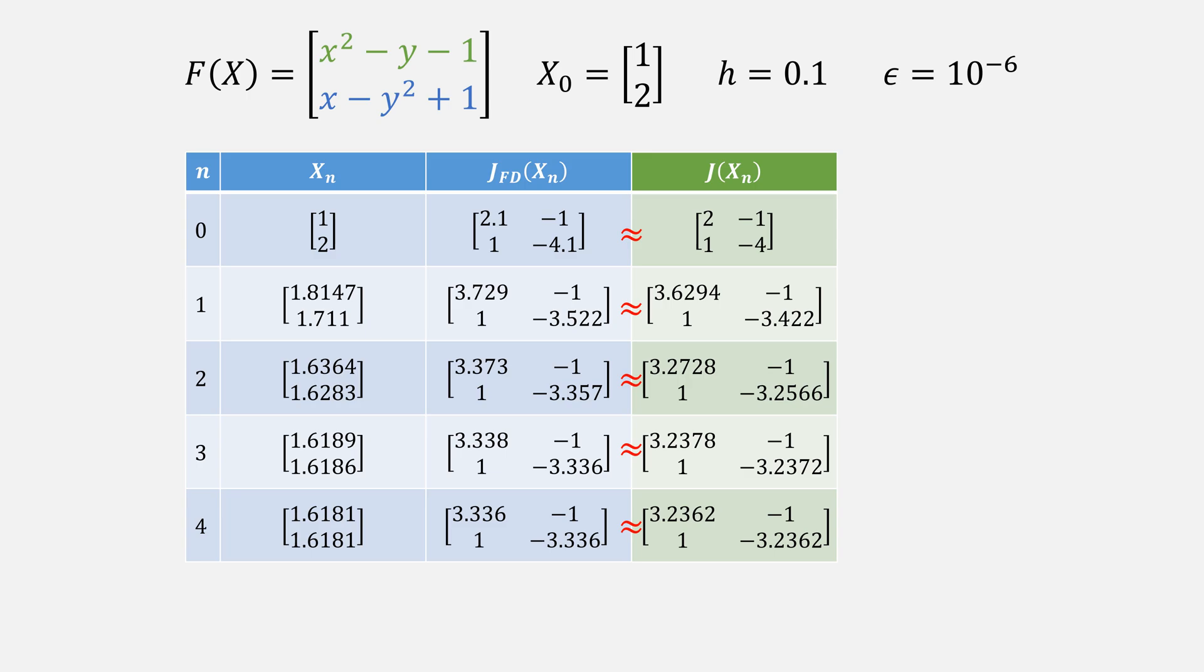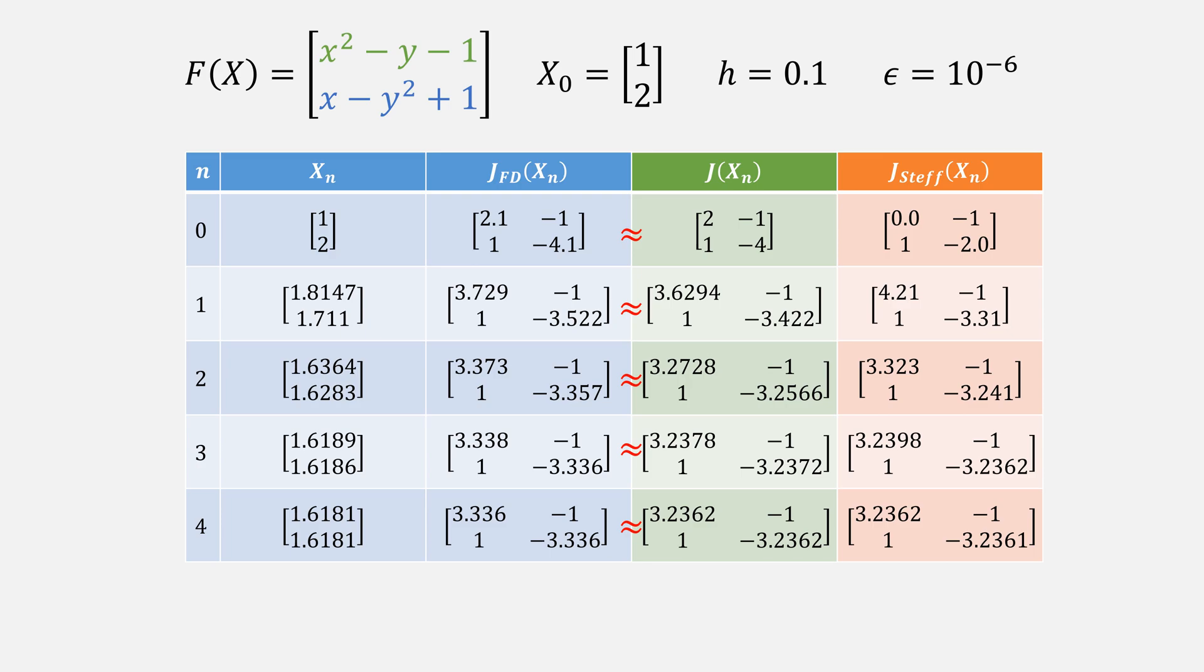If you compare that to the Jacobian approximation from Stephenson's method, I'll put a card to that video if you're interested. Notice that Stephenson doesn't do a very good job approximating for the first two iterations, but once you start to get close, it's actually very good. In fact, it's even better than finite difference method.